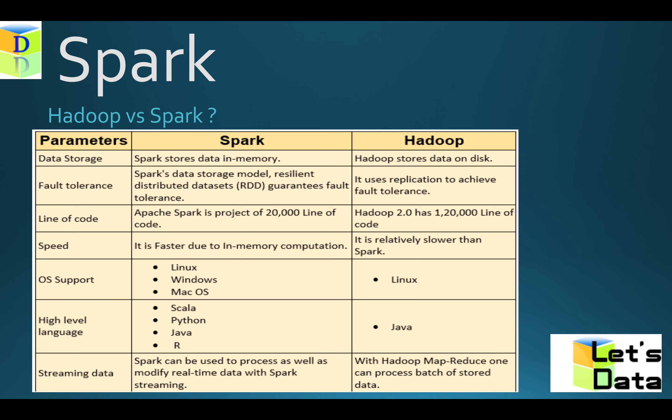Hadoop vs Spark — we can see different parameters. Data storage: obviously in-memory hai Spark mein, Hadoop mein disk pe tha. Spark is even faster even in case of disk. Fault tolerance because of RDDs and the data storage model — Spark is good for fault tolerance. Hadoop mein we were doing replication, line of code bhi kam ho jata hai.